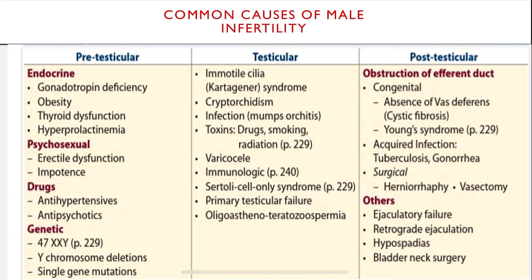Summary of the three classifications: pretesticular causes include endocrine, psychosexual, drugs, and genetic. Testicular causes include Kartagener's syndrome, infections, toxins, and immunologic conditions. Post-testicular causes involve obstruction — congenital, acquired, and surgical. Others include ejaculatory failure, retrograde ejaculation, hypospadias, and bladder neck surgery.